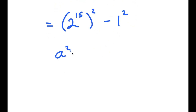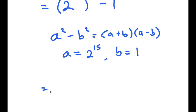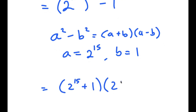If I have something in the form a squared minus b squared, this is equal to a plus b times a minus b. In this case, a is 2 to the power of 15 and b is 1. So now I have 2 to the power of 15 plus 1 times 2 to the power of 15 minus 1.